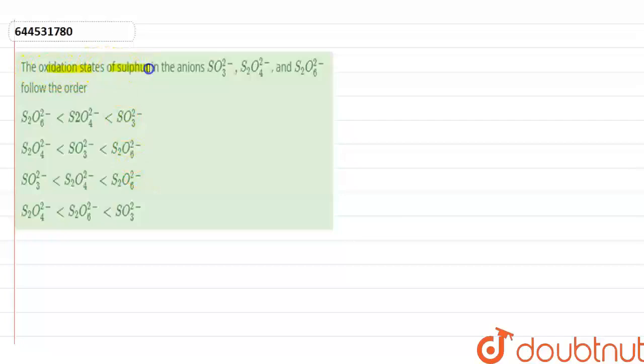Here the question given is that the oxidation state of sulfur in anion SO₃²⁻, S₂O₄²⁻, and S₂O₆²⁻ follows the order. So in this question we have to find out the order of oxidation state of sulfur in different anions.